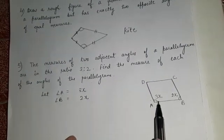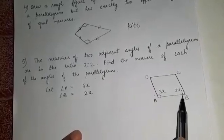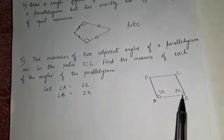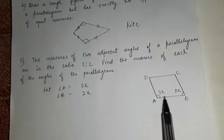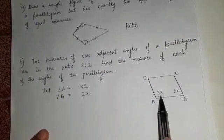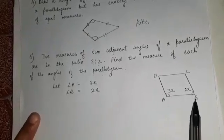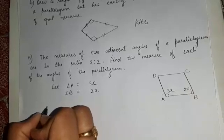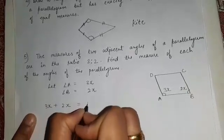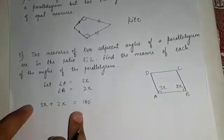I told you a property of parallelogram: the sum of adjacent angles of a parallelogram is equal to 180 degrees. That means we can form an equation here.